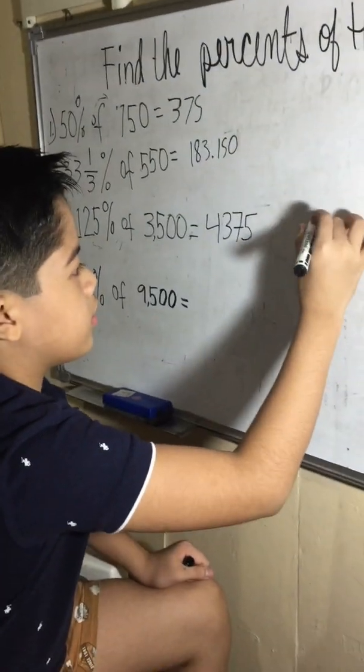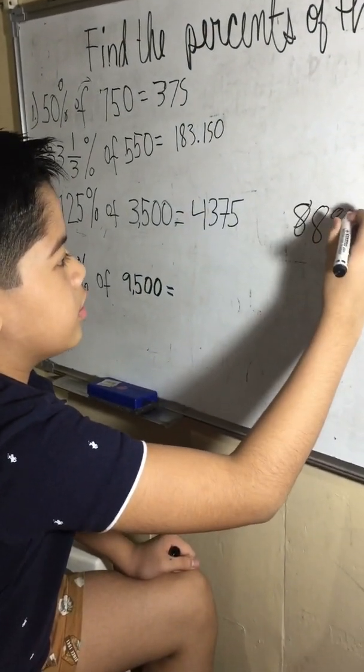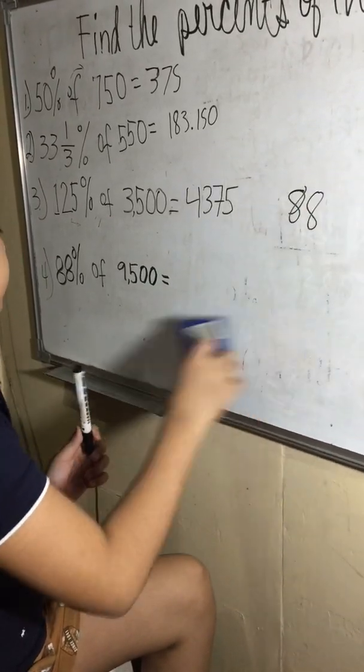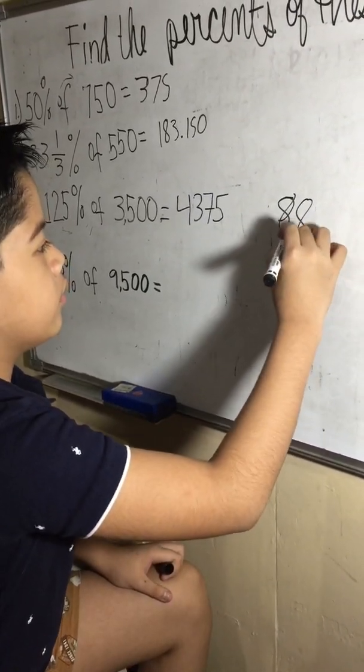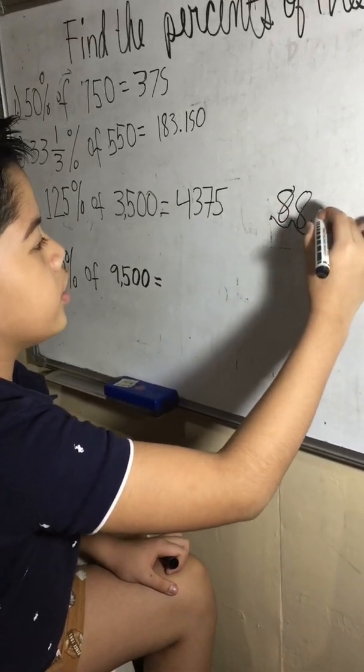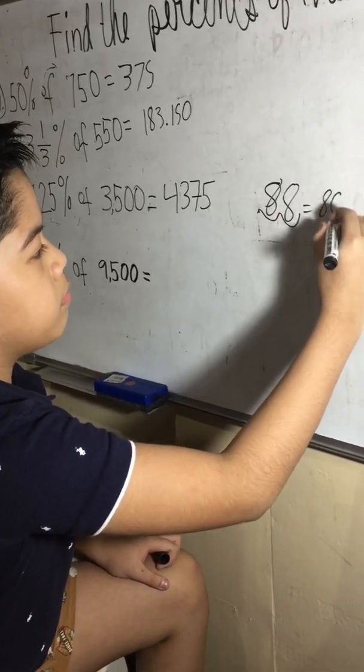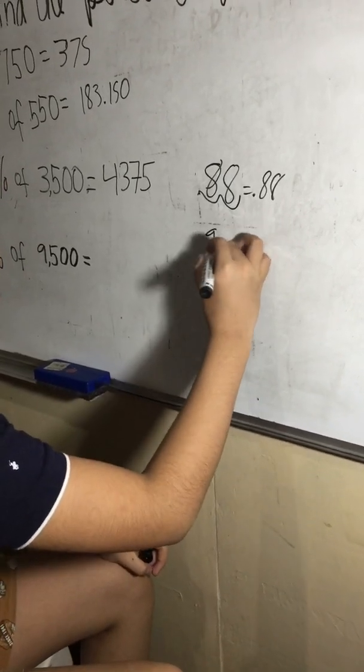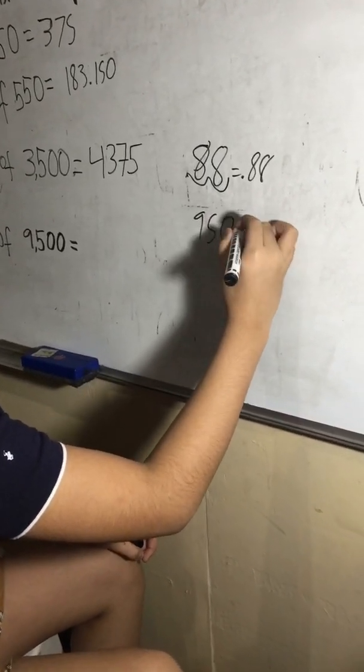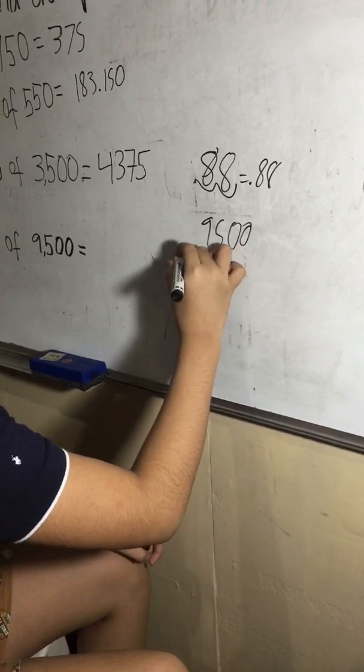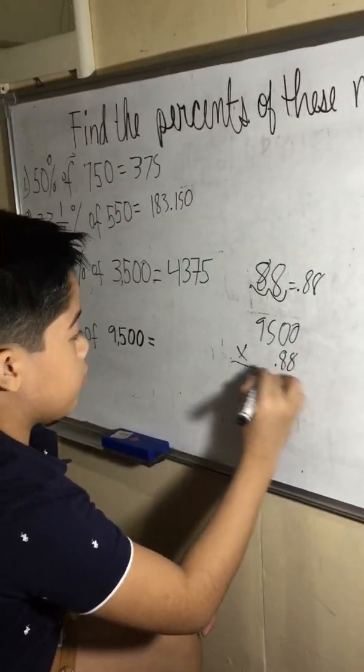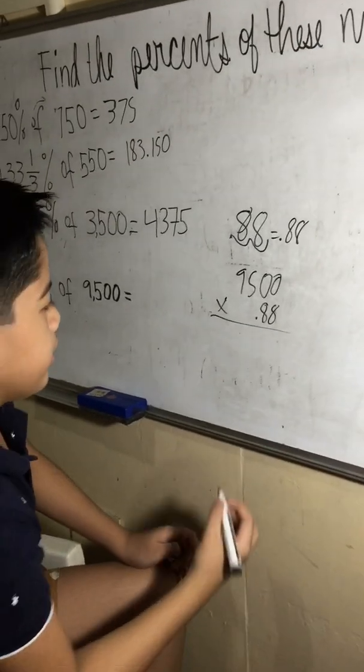88% - to make it a decimal, remove the percent, move the decimal point two places to the left, is now equal to 0.88. So now we multiply 9500 times 0.88, or 9500.